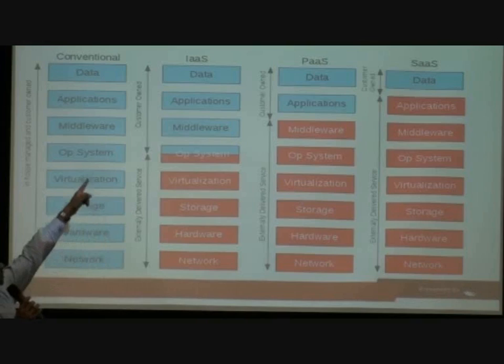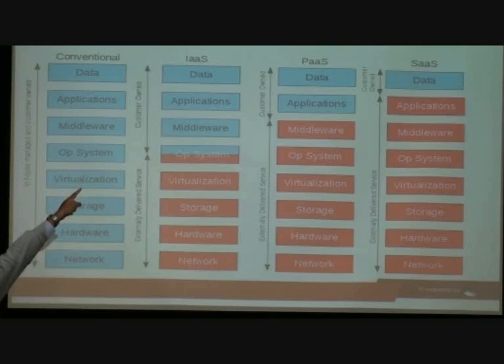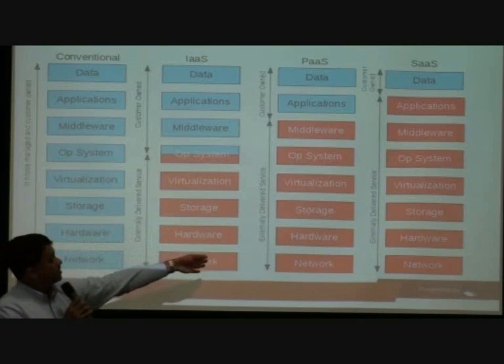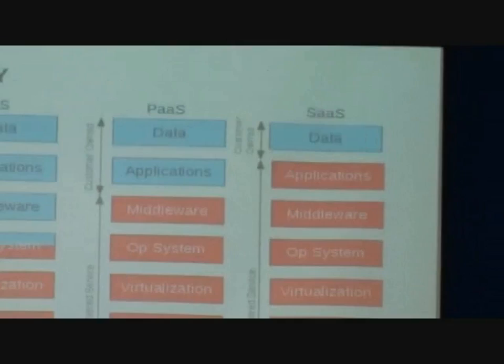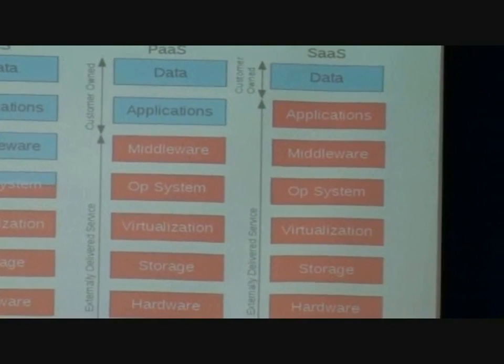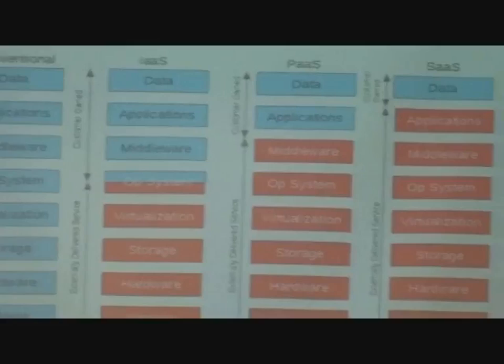As you move to the middle, IaaS — infrastructure as a service — the red portion is what is externally delivered by somebody else, such as Amazon. From the operating system and above, that is owned by you as the customer. PaaS — platform as a service — goes up a couple more levels to the middleware; you own the application and the data. On the extreme right is SaaS — software as a service — where the only thing you own is the data and everything else is provided by somebody else. You may have a mix of these based on your needs.